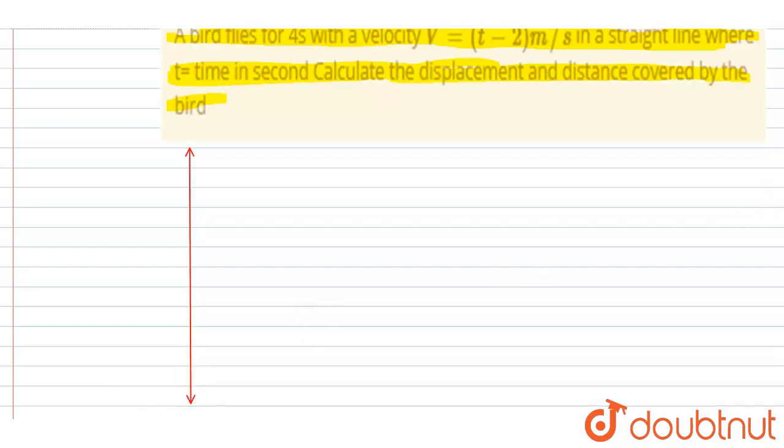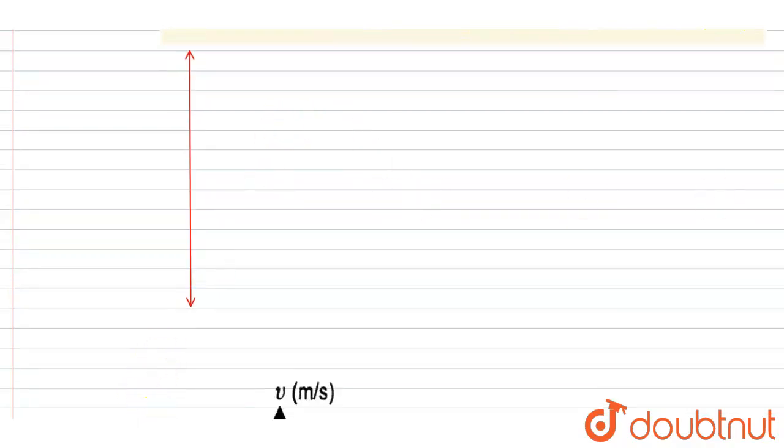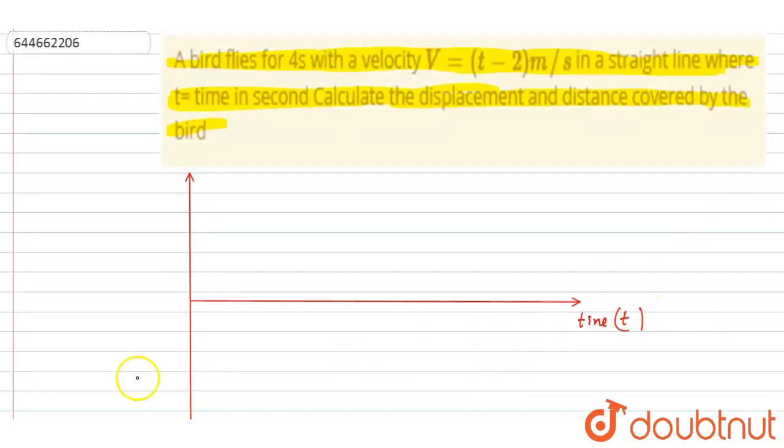So if you see here, if I draw the V-t curve, you can see here at t equals zero the velocity is minus 2, right? So if I draw the velocity-time curve like this, I am saying that this is the time, t in seconds.